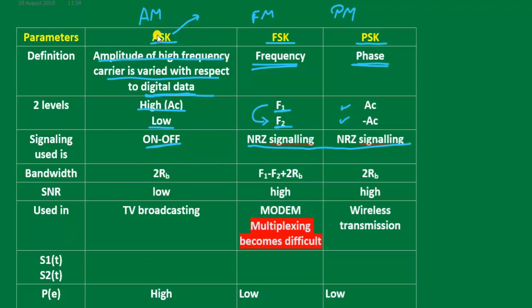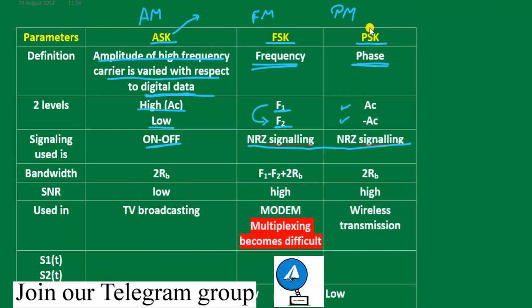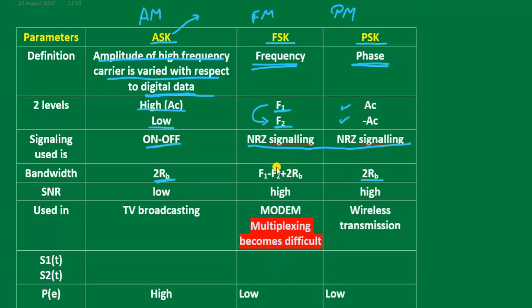The bandwidth used in ASK and PSK is 2W, where W is the frequency component of the message signal, also represented as 2Rb. The bandwidth in FSK is (f1 - f2 + 2Rb), where f1 is the upper cutoff frequency and f2 is the lower cutoff frequency. FSK requires huge bandwidth — theoretically approximately infinite.